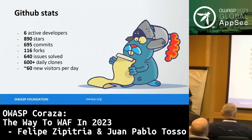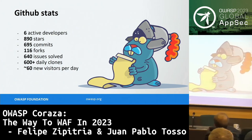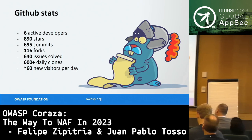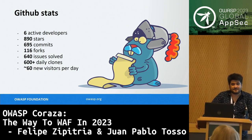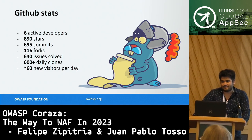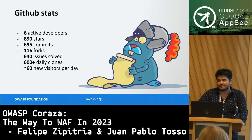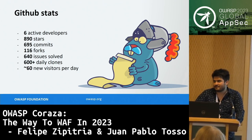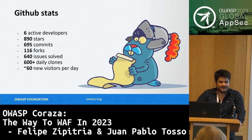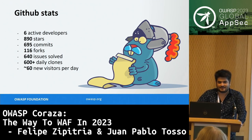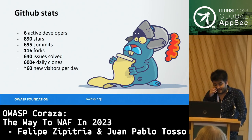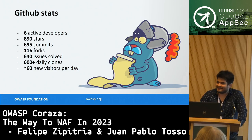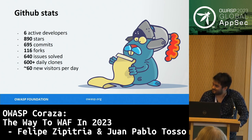Our numbers: we're a small project with six active developers, but there is a lot of work going on. With six developers we're releasing approximately five PRs per day. The project is going through super active development with a lot of testing. We're actively working to enhance the API, enhance performance, and enhance every aspect of the web application firewall. We have 890 stars and 695 commits.